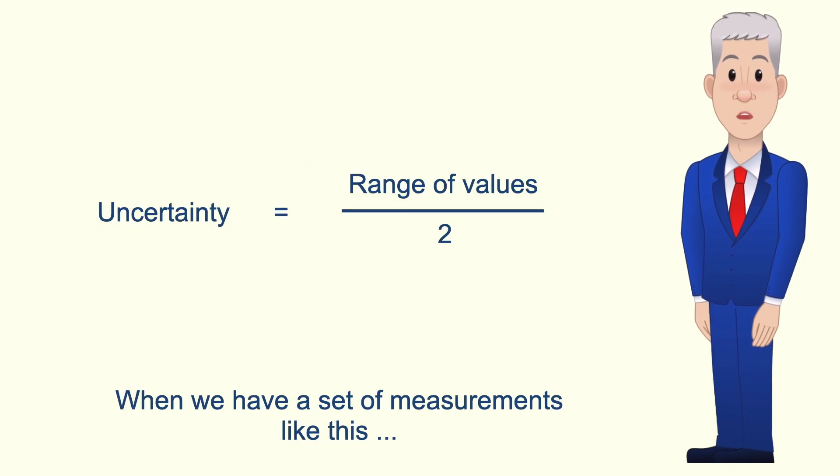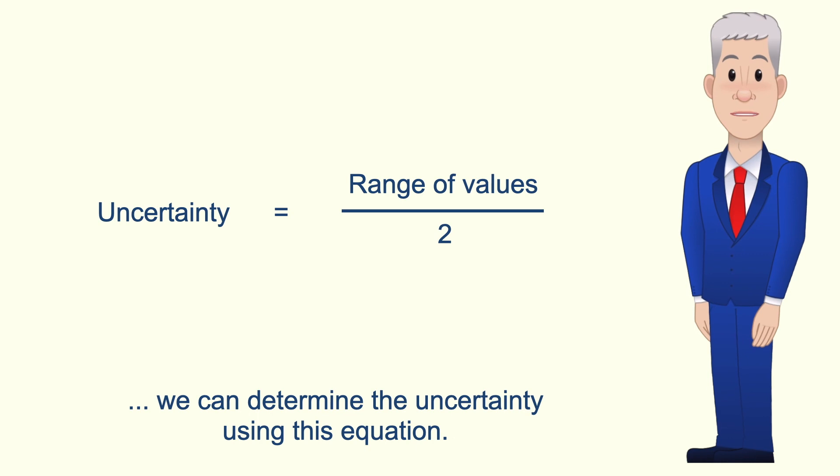Now when we have a set of measurements like this we can determine the uncertainty using this equation. The uncertainty is the range of values divided by two.